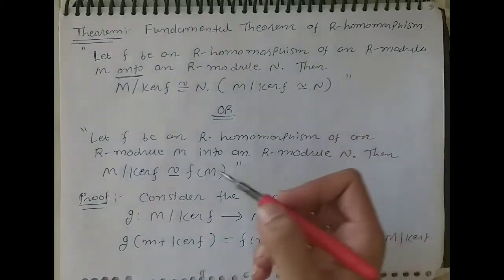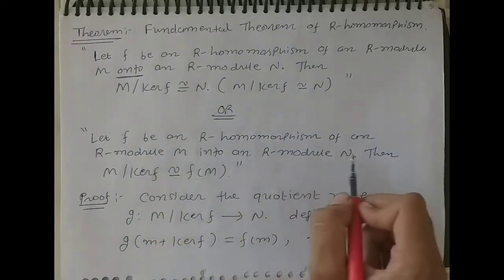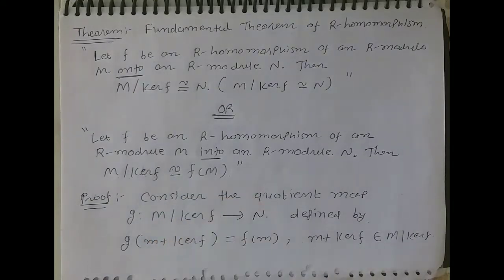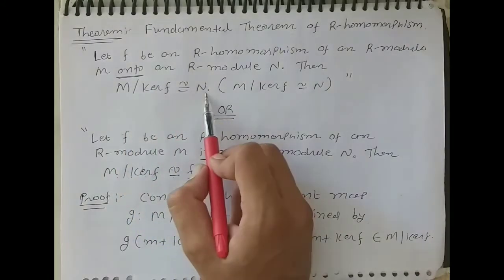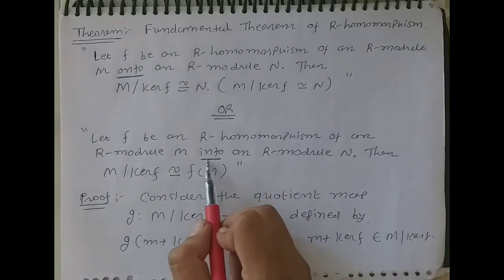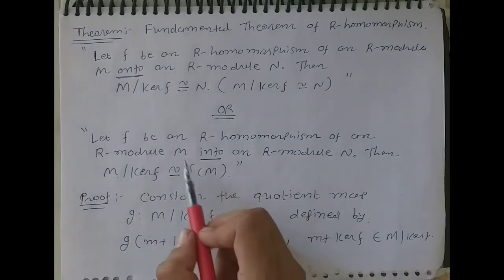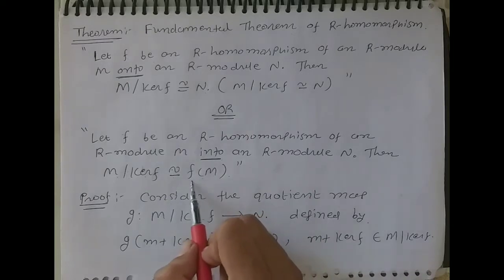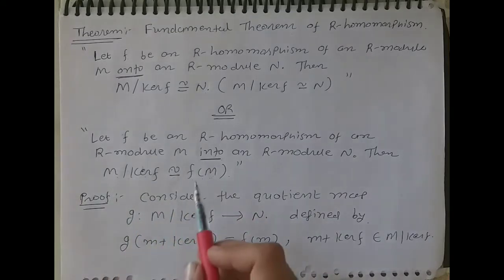For this theorem, a second statement can also be given: let F be an R-homomorphism of R-module M into R-module N. Here it is into. Then M modulo kernel of F is isomorphic to the image of M.